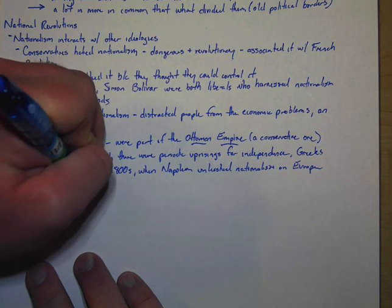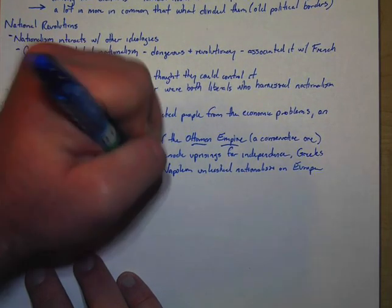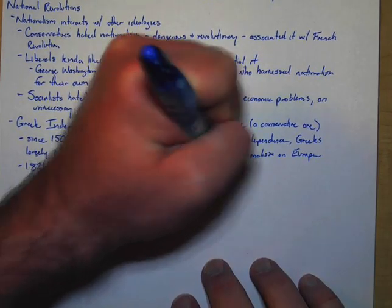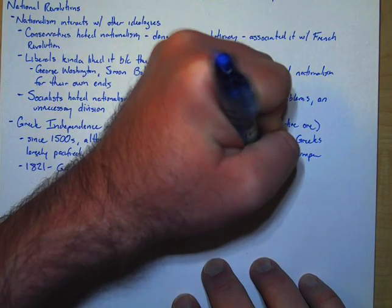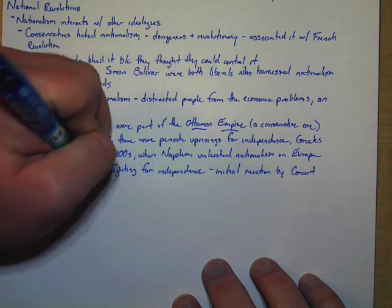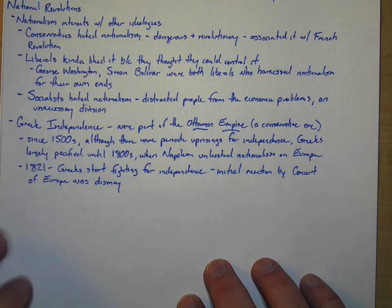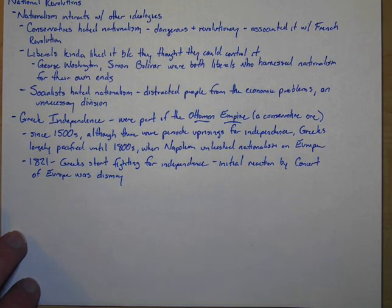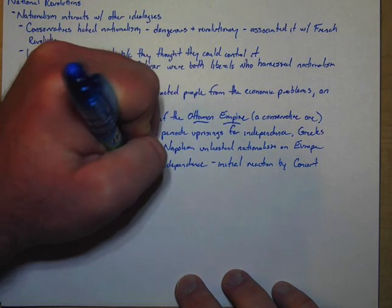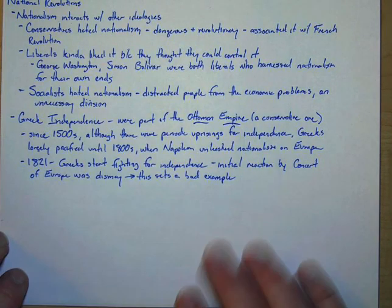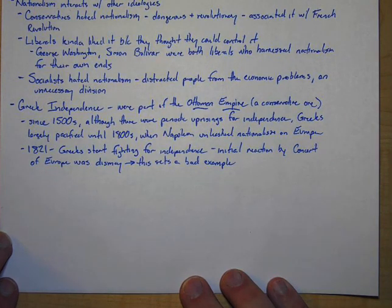In 1821, the Greeks start fighting for independence. And the initial reaction by the concert of Europe was dismay. They were really upset that this was happening because even though the Ottomans aren't really a friend, they're also not necessarily the enemy either. And this sets a bad example. So really, the great powers just kind of furrow their brows and wring their hands at this. And they don't like it, but they're also not going to get involved in it either.